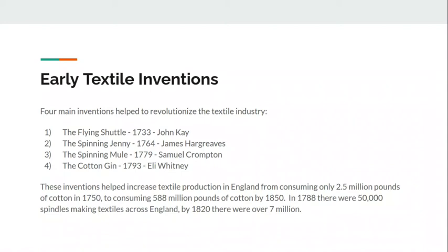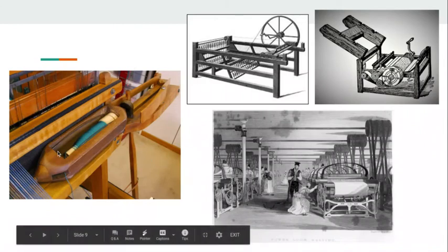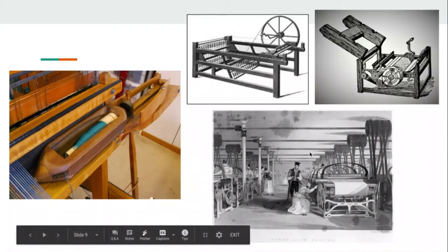Also, in 1788 there were 50,000 spindles — basically weaving machines making textiles — across England. But only 30 years later there were over 7 million. So you see this exponential growth happening in England at this point. Here are a few examples: the flying shuttle, the spinning jenny, the cotton gin, and what a factory would have looked like with several spinning jennies or spinning mules — large looms powered by water or steam power.